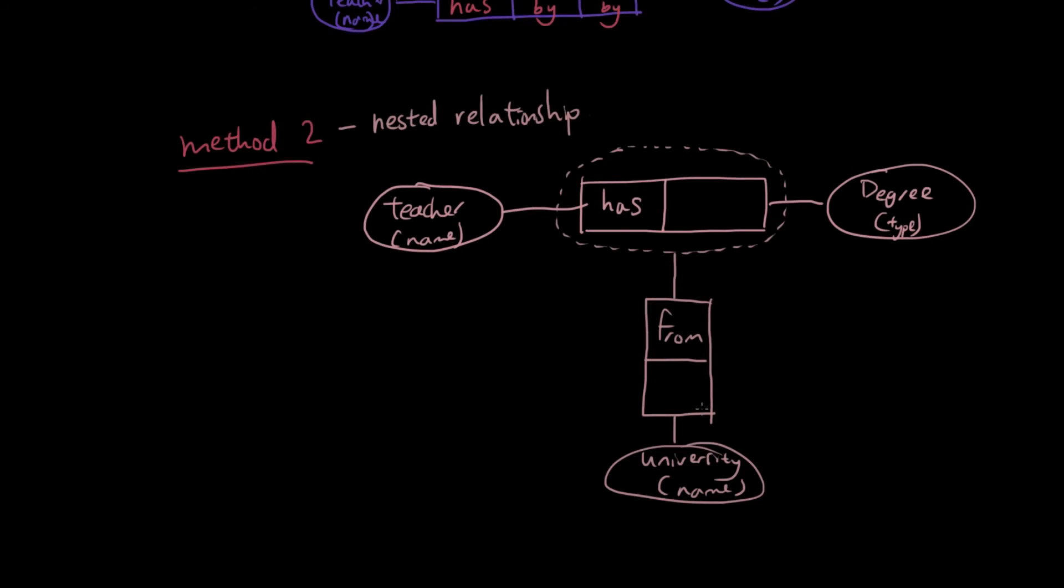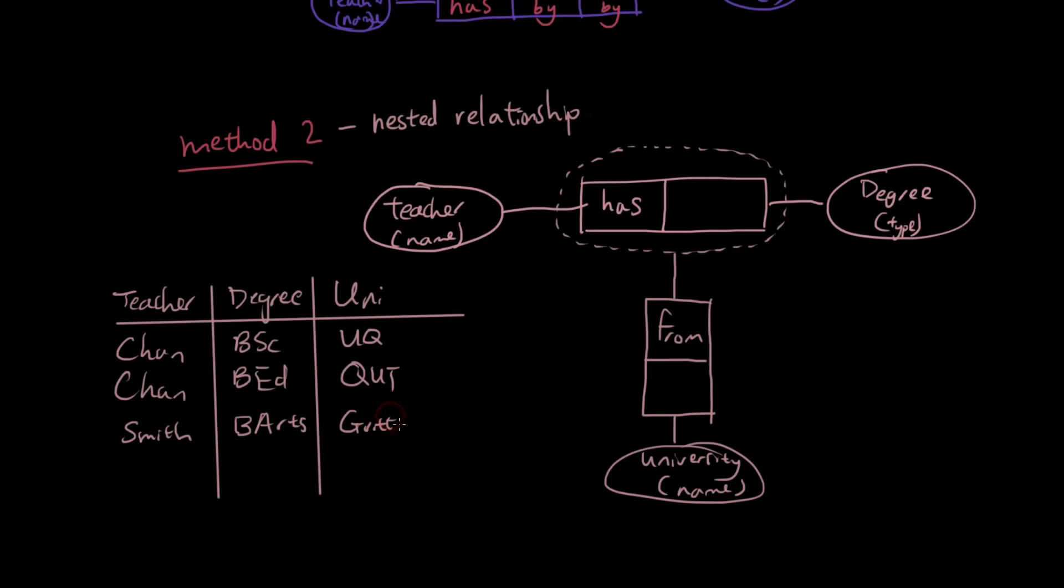So what does it look like in a table? If I have a table with three columns, I'd have teacher, degree, uni. And I could have Chan got his science degree from UQ, Chan got his education degree from QUT, and then Smith got his Bachelor of Arts from Griffith. Let's do another one - Smith got his Bachelor of Education from UQ as well.